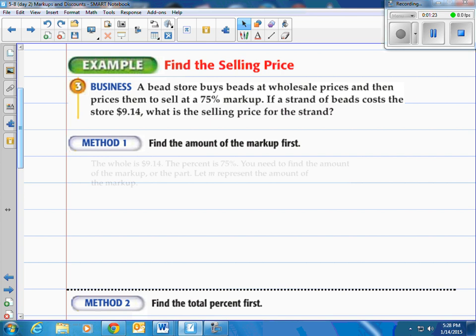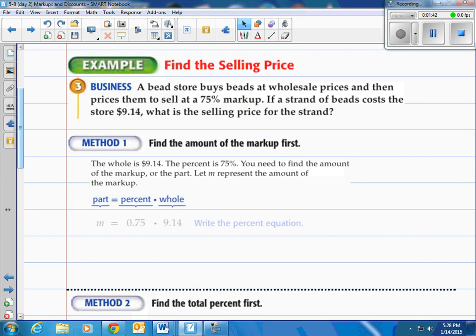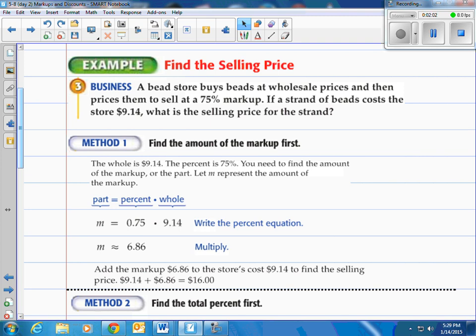Method one says find the amount of markup first. The whole is the $9.14. That's also the 100% cost to the store. The percent is 75% that you want to add on. So you need to find the amount of the markup or the part. Let M represent the amount of the markup. So we use their trusty little equation. M is going to equal 75% or 0.75 times the $9.14 wholesale price. That gives you $6.86. That's the 75% you want to add on. So add up the markup of $6.86 to the store's cost of $9.14 and that's called the selling price. That's what you would see on the actual tag. $16.